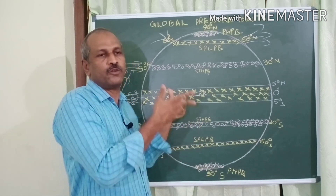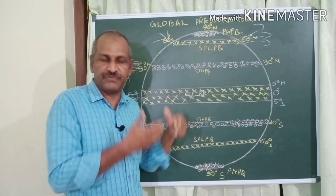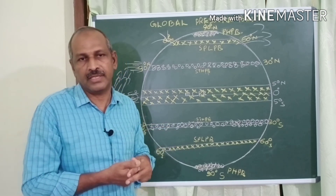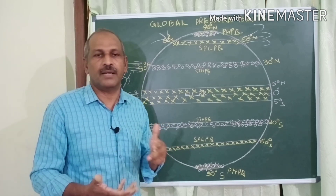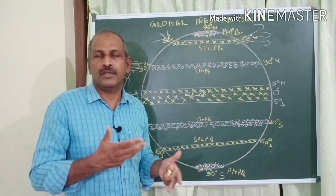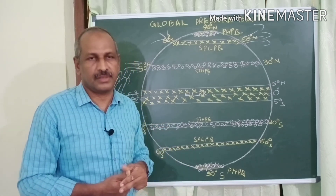This is the movement and shifting of pressure belts with the apparent movement of the Sun.